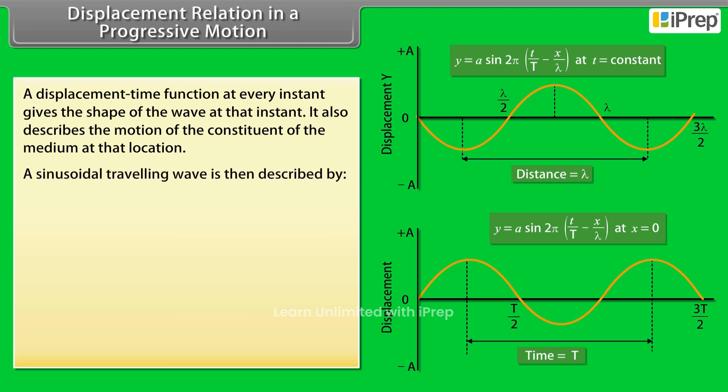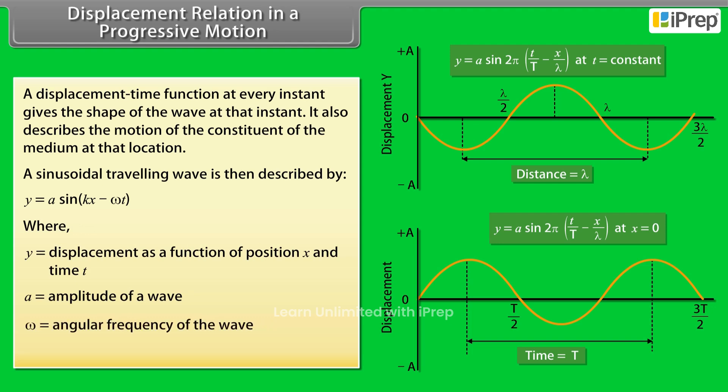y = a sin(kx - ωt), where y is displacement as a function of position x and time t, and a is the amplitude of a wave.